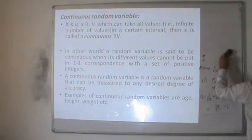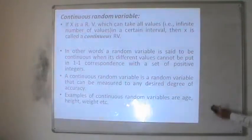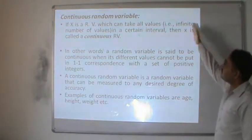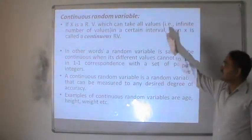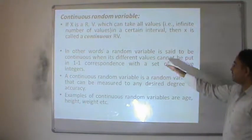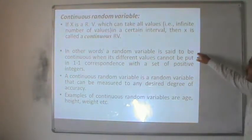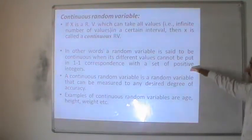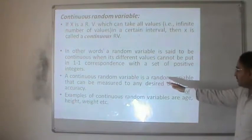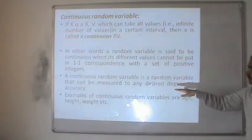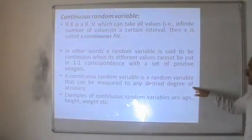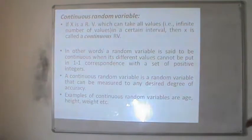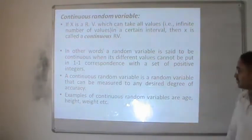Now we move to continuous random variables. According to the definition, if x is a random variable which can take all values — that is, infinitely many values — in a certain interval, then x is called a continuous random variable. In other words, a random variable is said to be continuous when its different values cannot be put into one-to-one correspondence with the set of positive integers. A continuous random variable is one that can be measured to any desired degree of accuracy. Examples of continuous random variables are age, height, and weight of a person or group of persons.